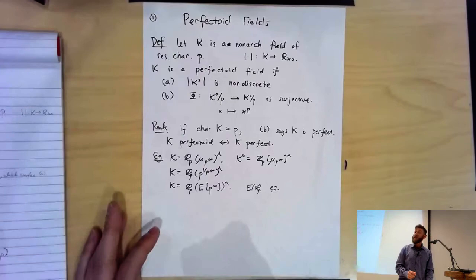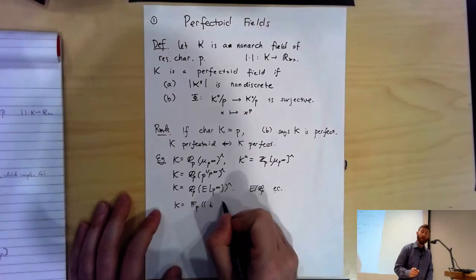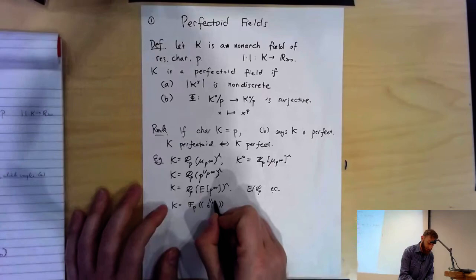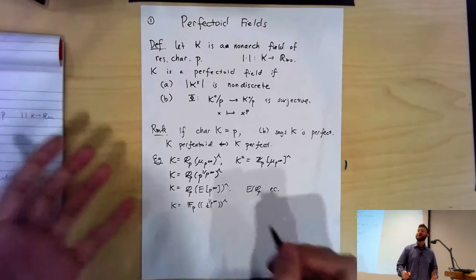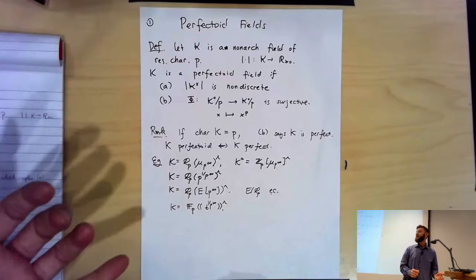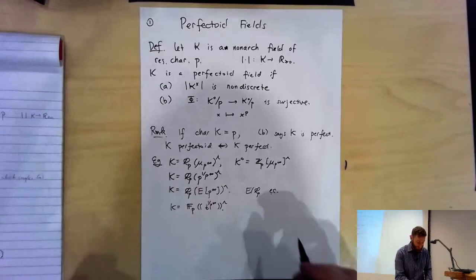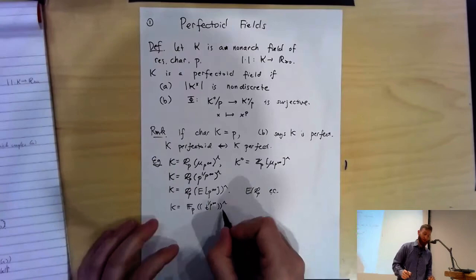I should give a characteristic P example. The residue field will be F_P. To make it non-Archimedean, I start with a Laurent series field — it's non-Archimedean of characteristic P — but then I have to make it perfectoid, which means I have to make it perfect. So I adjoin all P-power roots, and then take a T-adic completion. Members of this field are fractional power series in T — Laurent, so they have negative powers of T — but the number of nonzero coefficients attached to exponents below a given bound must be finite.